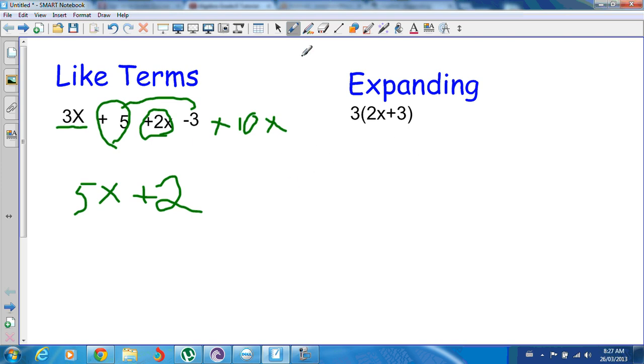When we're talking about expanding, all we're basically doing is getting rid of the brackets. Anything outside the brackets here that is touching the bracket. So if it's just a three outside here, that will simply mean multiply everything that's inside the brackets by what's outside it.